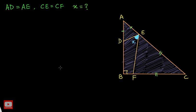Hello everyone. In today's video, we have another interesting geometry challenge in front of us. We have a right angle triangle ABC where B is the right angle, and we have points D, E, F such that AD equals AE and CE equals CF. We need to find the value of angle X.